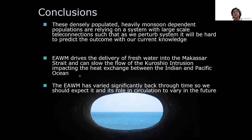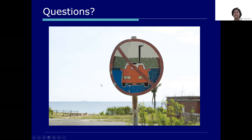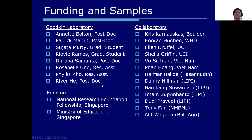In conclusion, these densely populated, heavily monsoon-dependent populations rely on a system with large-scale global connections. When we perturb the system, it's really difficult to understand the outcome, so we're looking back in time to understand it. The main finding is that the East Asian Winter Monsoon is an important secondary driver of flow into the South China Sea and flow out of the Indonesian straits into the Indian Ocean. We need to understand the system better because the impacts on global circulation are becoming more clear.